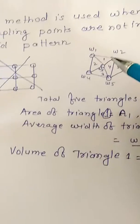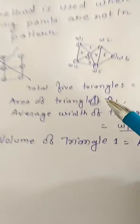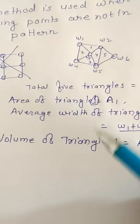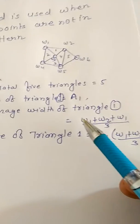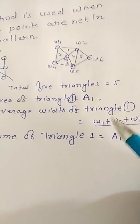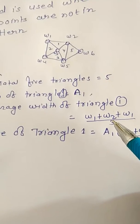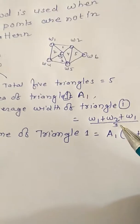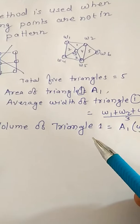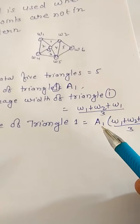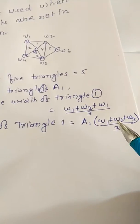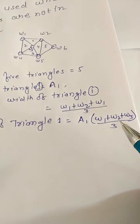In this way we can calculate the area. Let us say the area of triangle 1 is A1. The average width of triangle 1 is equal to (w1 + w2 + w3) / 3. So the volume of triangle 1 will be A1 × (w1 + w2 + w3) / 3.